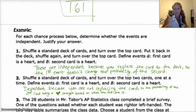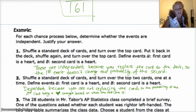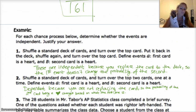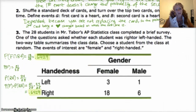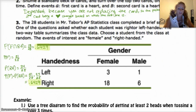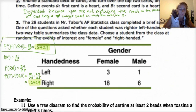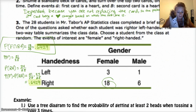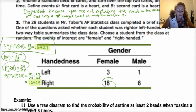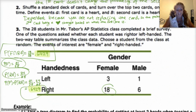The first one is independent because you replaced the card to the deck, so the first event doesn't change the probability of the second. The second question — they don't replace the card back into the deck, so the probability of getting a heart the second time changes no matter what the first card is. And then the last one, those two are independent because I found the probability that a person is female and right-handed, which is 18 out of the total 28 students. Then I found the individual probabilities of being female and right-handed — 21 out of 28 and 24 out of 28 — and multiplied them together. The probability of female times the probability of right-handed, which is 21/28 times 24/28, ends up being the same number, so those are independent events.